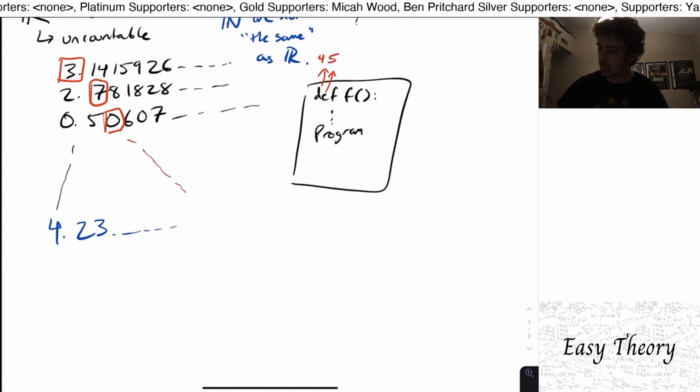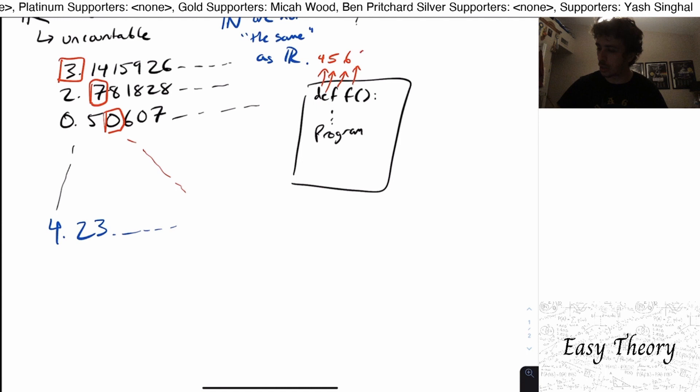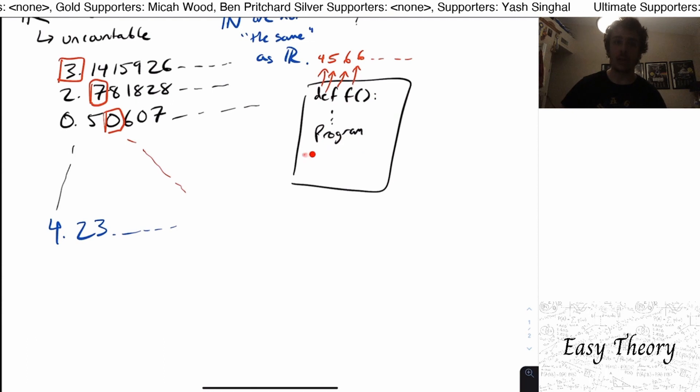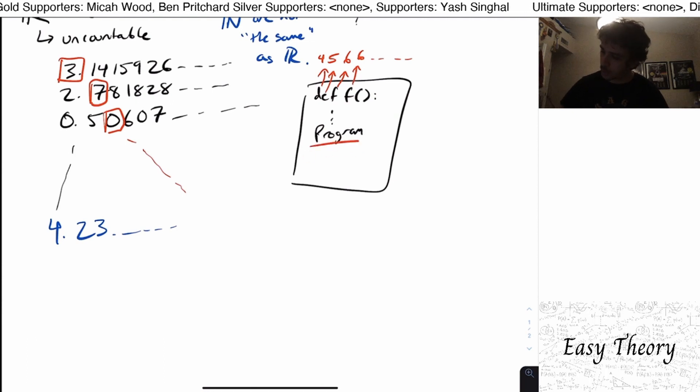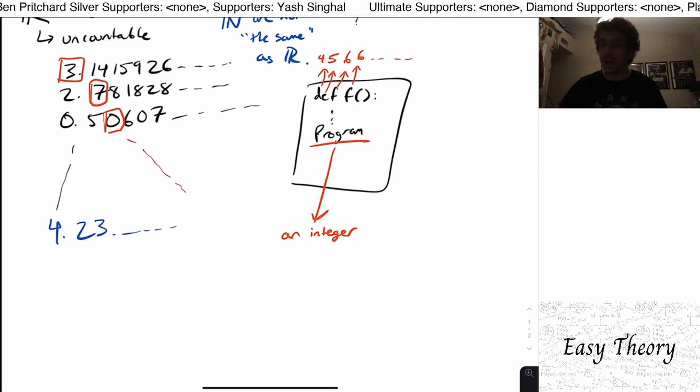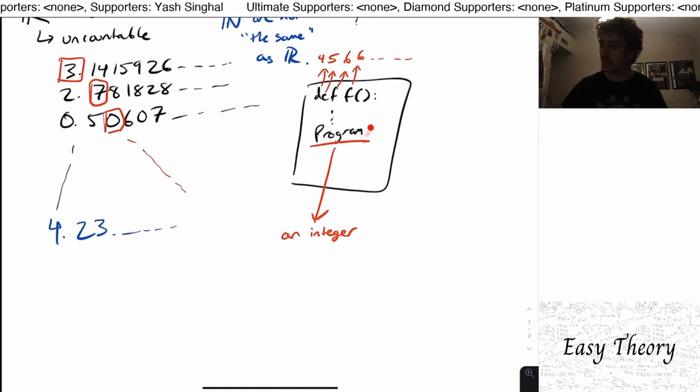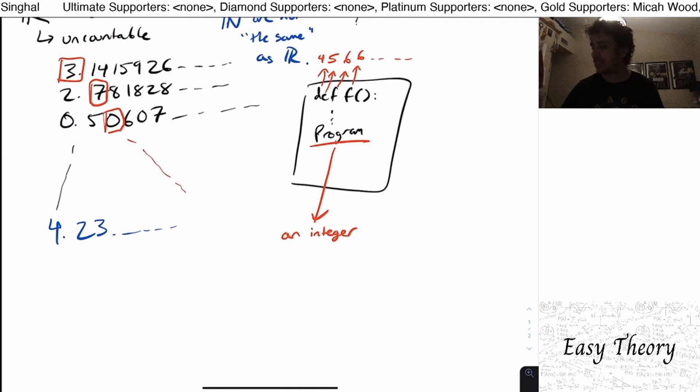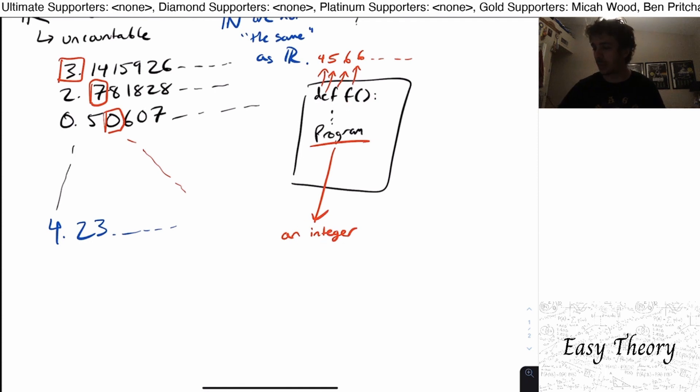And then what I can do is I can associate to each character a number. Well then if I just look at the entire program it's one gigantic number. So this program we can associate to it one integer. And it's not possible for an integer to encode two different programs because of how the encoding works. If they were two different programs then they must differ at some position but then that means that they encode different numbers.